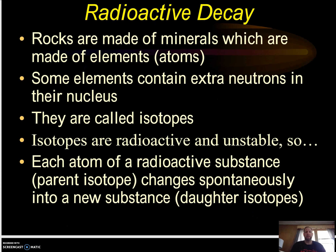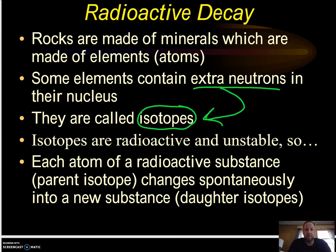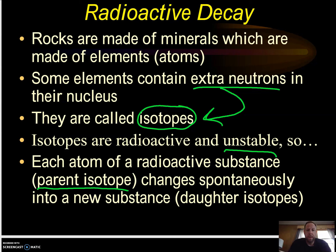What is radioactive decay? Radioactive decay is when rocks are made of minerals, which are made of elements, which are made of atoms. Some of these atoms contain extra neutrons in their nucleus. Anything that contains extra neutrons in the nucleus is called an isotope, and an isotope is unstable. So isotopes are unstable and they want to become stable. Over time, they change from a parent isotope into a daughter isotope.